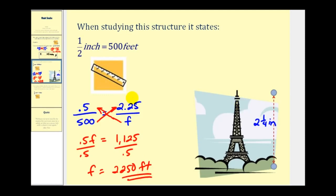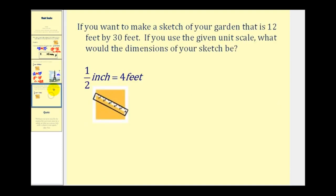Let's look at one more example using this information in the opposite direction. Let's say you want to make a sketch of your garden that is twelve feet by thirty feet. If you use the unit scale one half inch equals four feet, what would the dimensions of the sketch be so that it is proportional to the actual size of the garden? The ratio we're going to use will be one half inch equals four feet, so point five inches to four feet.